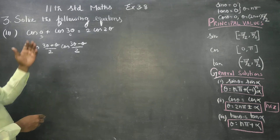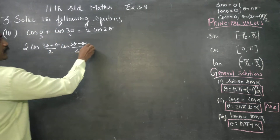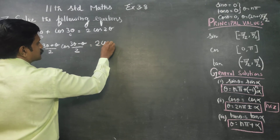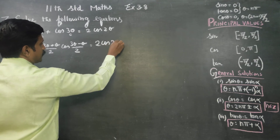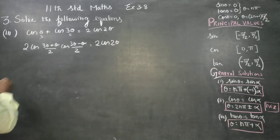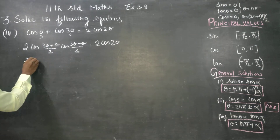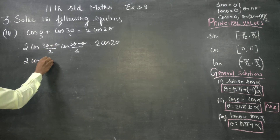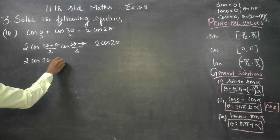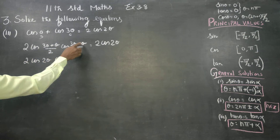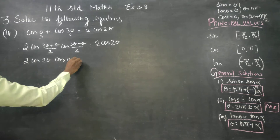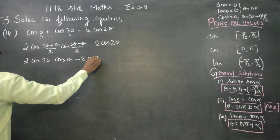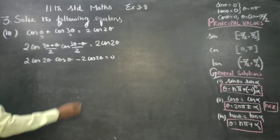Applying the cos c plus cos d formula, this equals 2 cos 2 theta. Simplifying: 2 cos of (4/2) is 2 theta, and cos(2 theta / 2) is theta. This gives minus 2 cos 2 theta equal to 0.